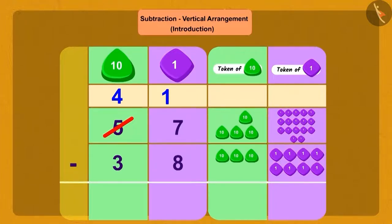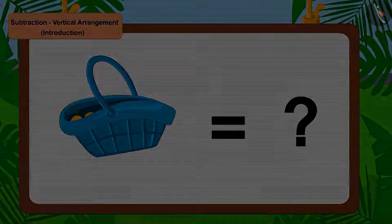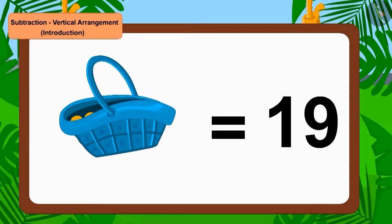Now if we subtract 8 ones from 17 ones, we get 9 ones. After removing 3 tens from 4 tens, how many tens are left? Absolutely correct, 1 ten. Now there were only 19 laddos left in Golu's basket.